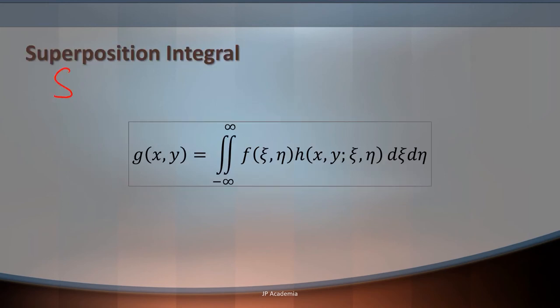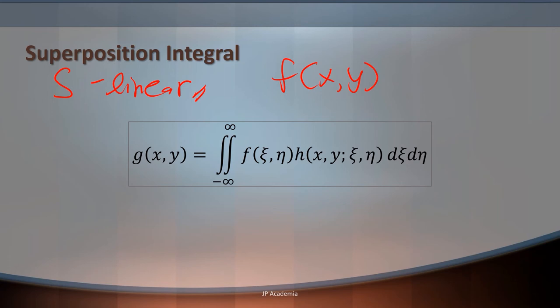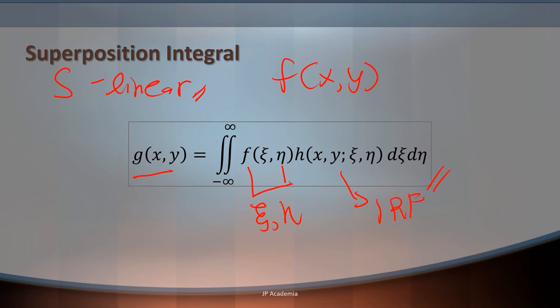Let's assume that our system S is a linear system. Then, if we have a certain arbitrary input F with two independent variables x and y as input to our system S, then we will get an output G. This is expressed as a double integral of your input at a certain point psi and eta times your point spread function or impulse response function. This integral is known as the superposition integral, and it shows that your point spread function uniquely characterizes a linear system — if you know your point spread function, then you can calculate its output in response to any given input.